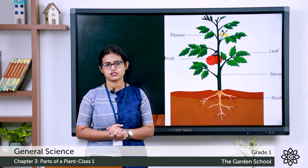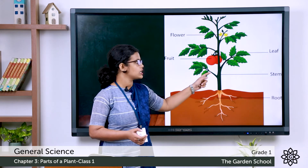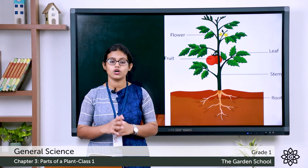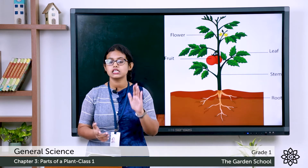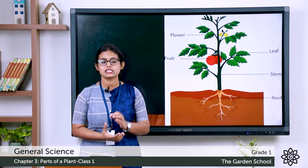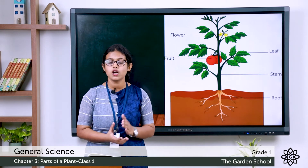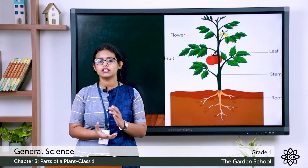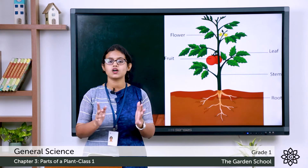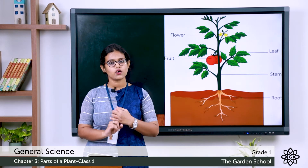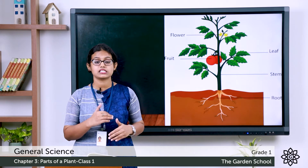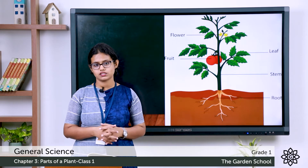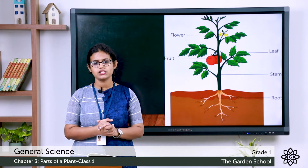A plant has six parts: the root, stem, leaf, flower, fruit and seed. The first three parts — root, stem and leaf — help the plant to get water, to grow and to make food. The other three parts — flower, fruit and seed — grow into a new plant. So let's discuss each part of the plant one by one.